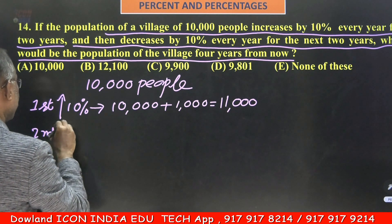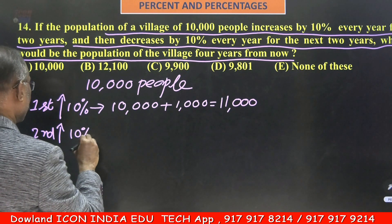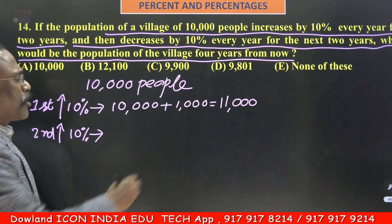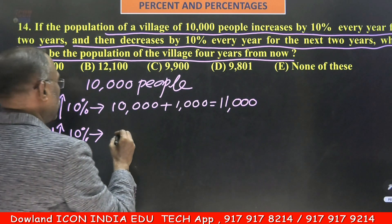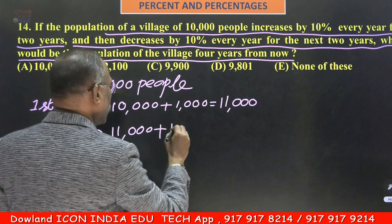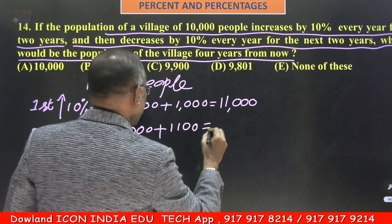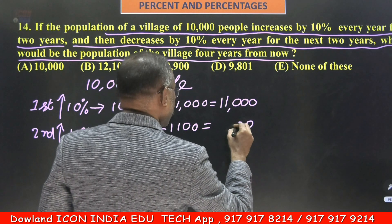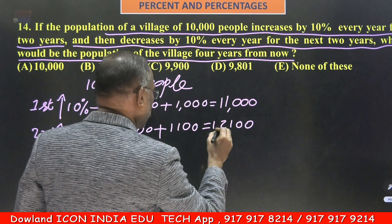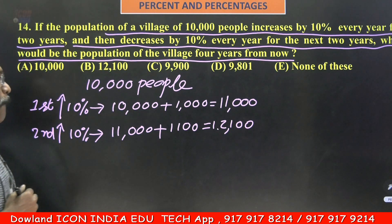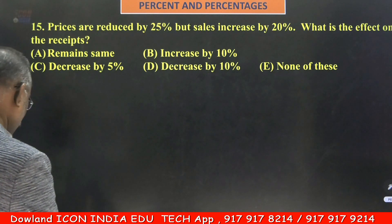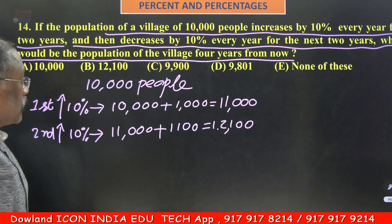Second year increase is also 10%. 10% of 11,000 is 1,100. So 11,000 plus 1,100 equals 12,100. We are using only common sense here — no formula.